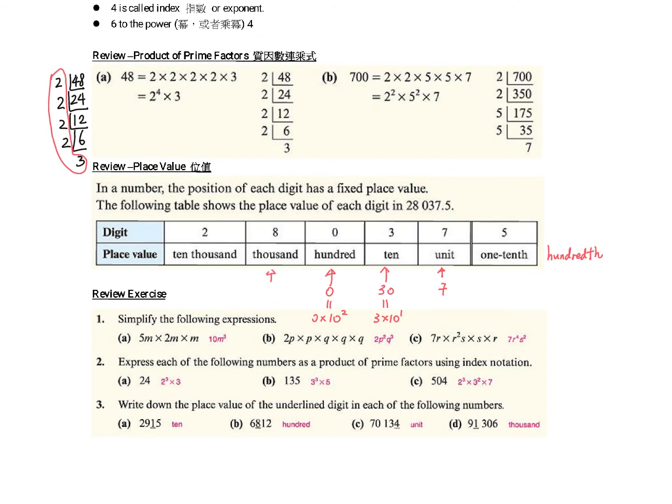This 8 is 8000, which is 8 times 10 cubed. This is 20,000, which is 2 times 10 to the power of 4.